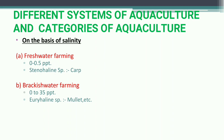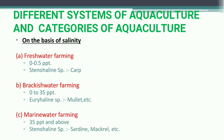In brackish water farming the salinity range is 0 to 35 PPT. In marine water farming, salinity is 35 PPT and above, and organisms present are stenohaline species such as sardines and mackerels. So on the basis of salinity we have three categories: freshwater (0–0.5 PPT), brackish water (0–35 PPT), and marine water (35 PPT and above).